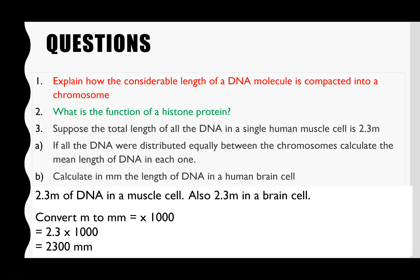Part B asks us to calculate in millimetres the length of DNA in a human brain cell. This is testing whether you know that in every body cell you have exactly the same DNA. So if you have 2.3 metres of DNA in a muscle cell, you'll have exactly the same in a brain cell — also 2.3 metres. All we need to do is convert metres to millimetres, which is multiplied by 1000, giving 2,300 millimetres. I'll link a video on microscopes which covers unit conversions if you need a recap.